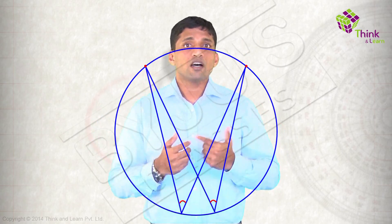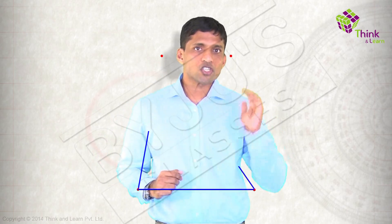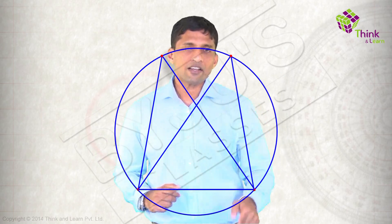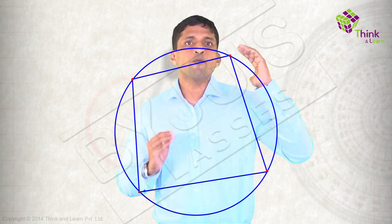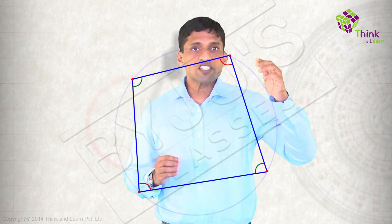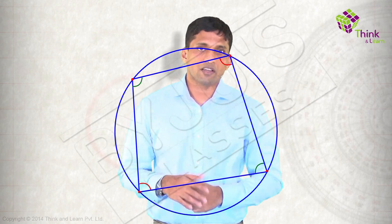Next, the converse is, if a segment is subtending equal angles, the four points are concyclic. The next one is, in a cyclic quadrilateral, sum of opposite angles is 180 and the converse is, if sum of opposite angles is 180, then the quadrilateral is cyclic.